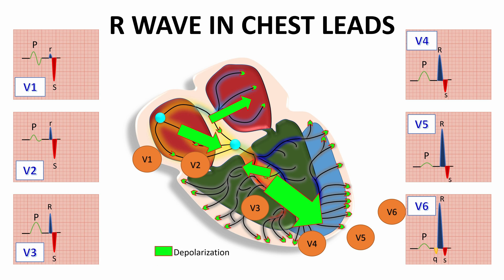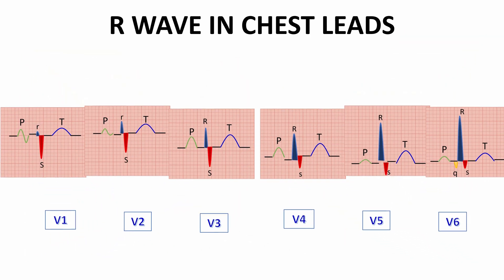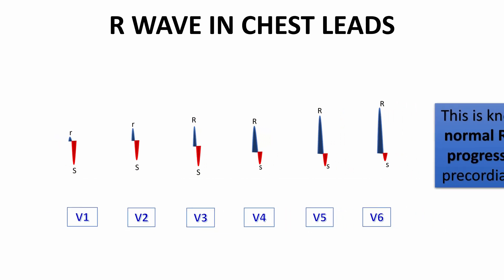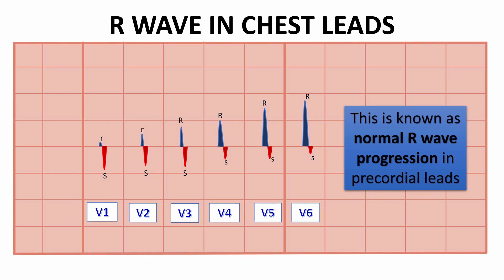If we take the ECG of each chest lead and put them together, we notice that as we go from V1 to V6, the R wave becomes taller. Under normal circumstances, the R wave voltage gradually increases as we move from lead V1 to lead V6. This is known as normal R wave progression in the precordial leads.